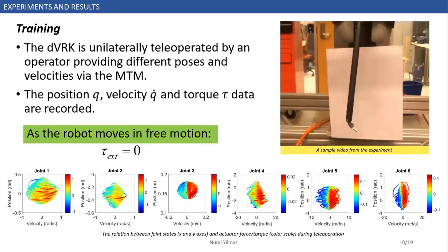Here you can see the relation between joint states and actuator force torque during training operation. The X and Y axis showed the joint position and velocity respectively, whereas the color scale represents the force torque measurements.